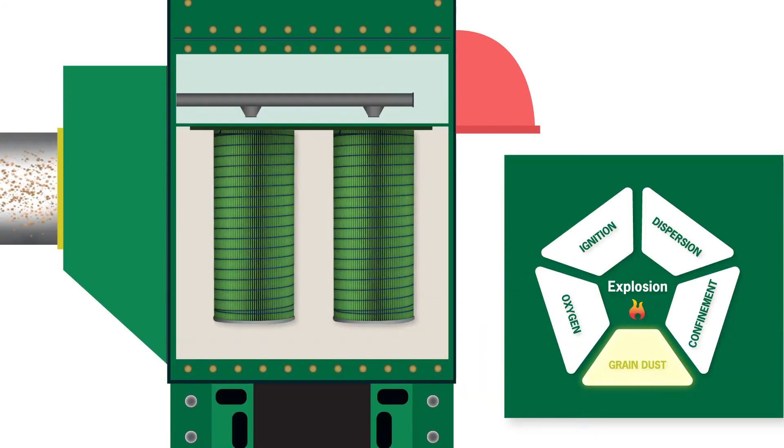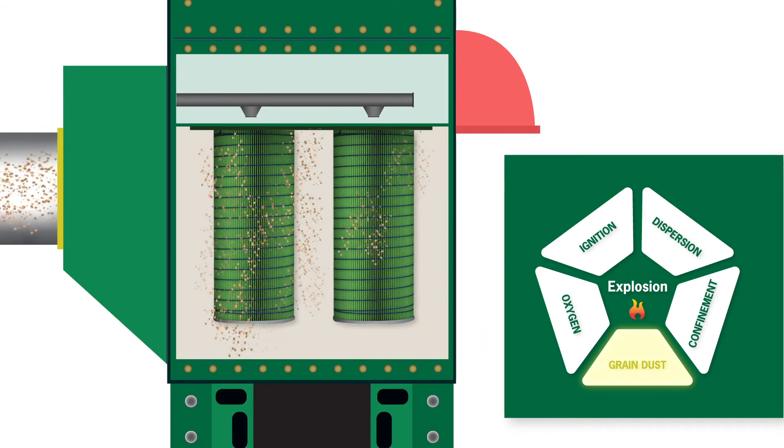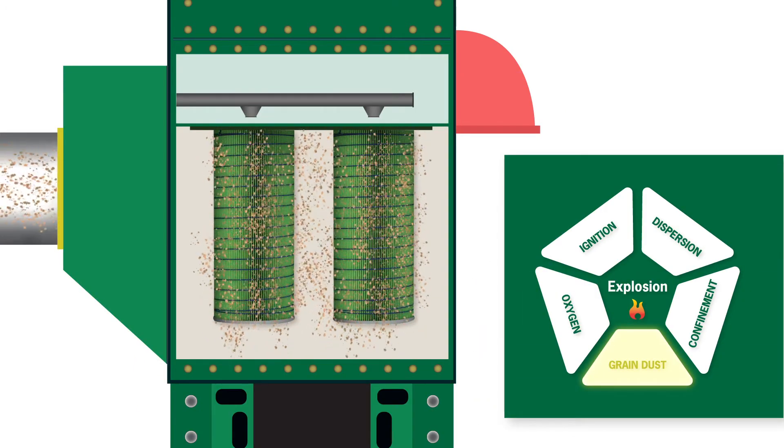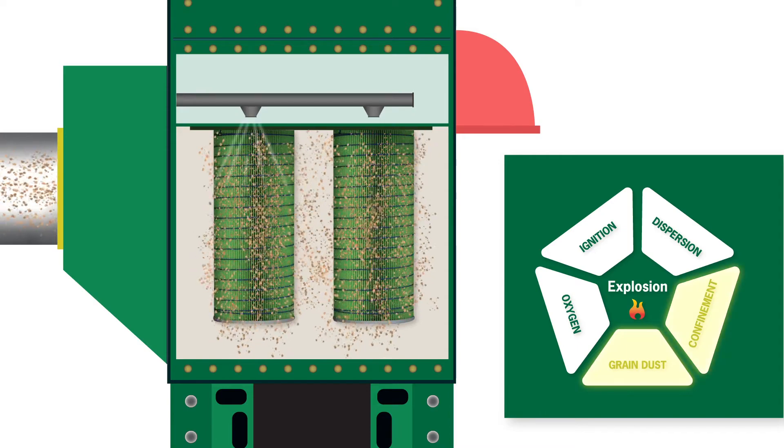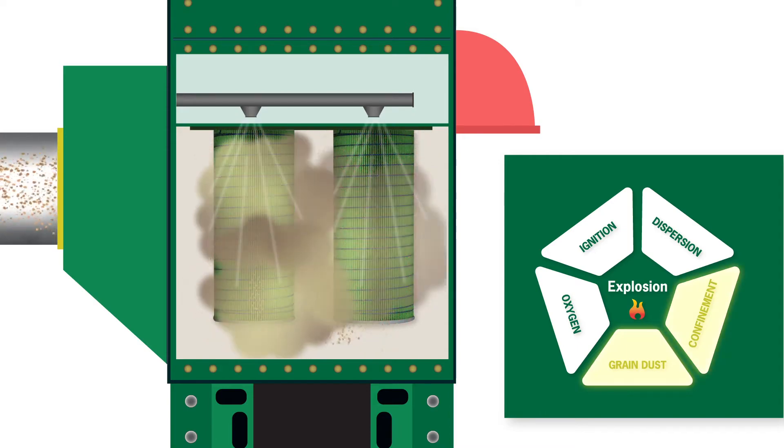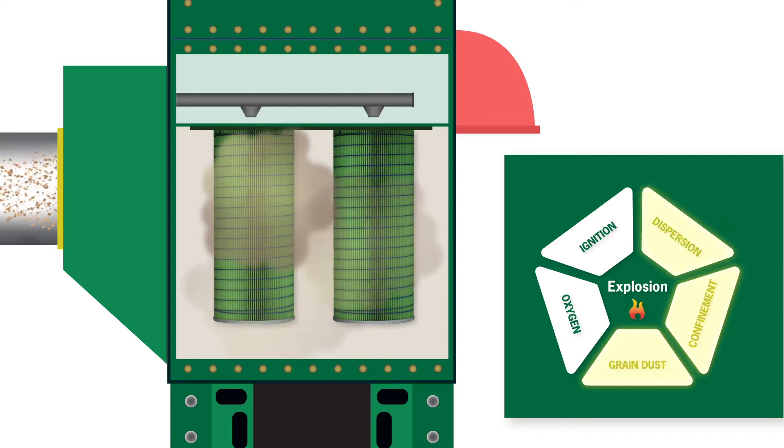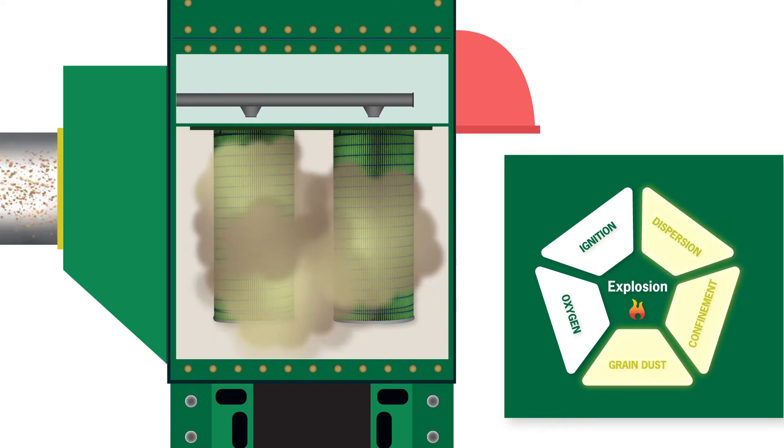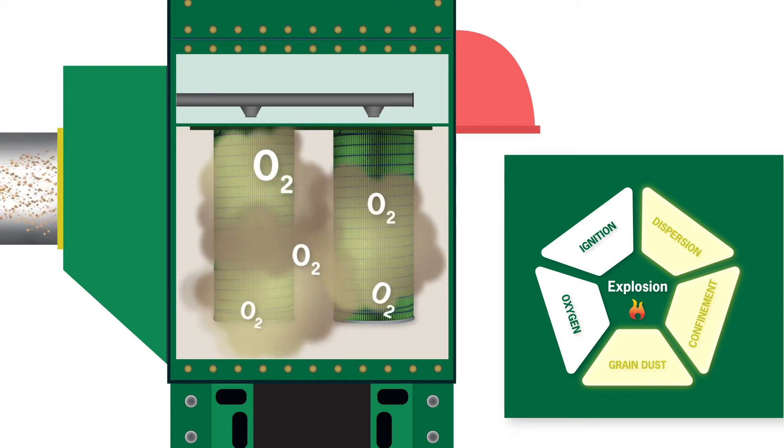Grain is the combustible dust, the fuel. As grain dust is pulled into the dust collector, you get confinement. When the compressed air pulse cleaners activate to blow dust off the filter cartridges, that's dispersion. The dust is dispersed into a cloud. When that happens, the dust is mixed with oxygen-rich air.